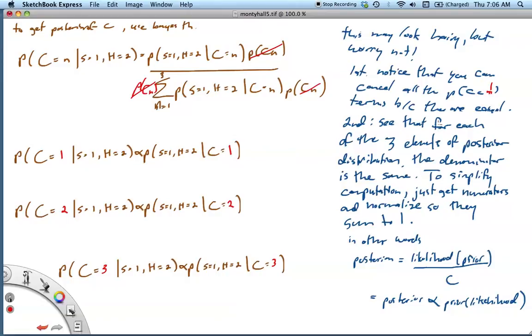Secondly, we want to see that for each of the three elements of the posterior distribution, the denominator is the same. This piece doesn't change. So to simplify the computation, we can just take the numerators and normalize so that they sum to 1. So we're going to just forget about the denominator completely. So in other words, in the Bayesian model, the posterior is the likelihood times the prior divided by some constant. We can just get rid of the constant and note the proportionality of the posterior with the prior times the likelihood. In this case, since the priors were all the same, they can cancel out and this proportionality holds.